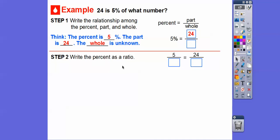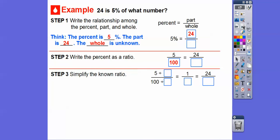Now we're going to write this percent as a ratio. So 5% is the same as 5 one-hundredths. Now we're going to simplify that known ratio. We want this top to be 1. Since 5 goes into 100 evenly, 5 divided by 5 is 1, and 100 divided by 5 is 20.